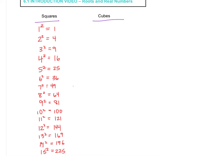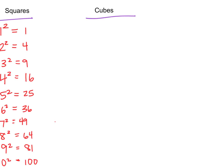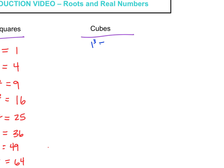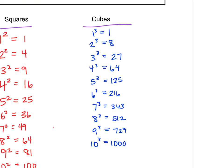Pause the video if you need to. We also want all of our cubes. The cube is when you multiply a number by itself three times — so 1 times 1 times 1, 2 times 2 times 2, and so forth. So 1 cubed is 1, 2 cubed is 8, 3 cubed is 27, and we'll continue this list up to 10. I went ahead and filled in up to 10 cubed — 10 times 10 times 10 is 1,000. We're going to reference these numbers quite a bit over the chapter.